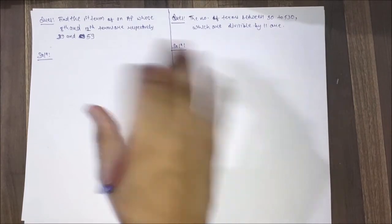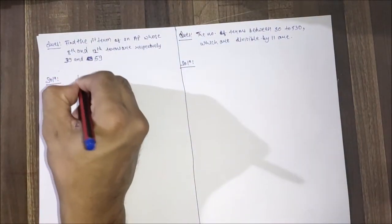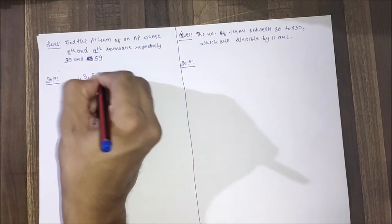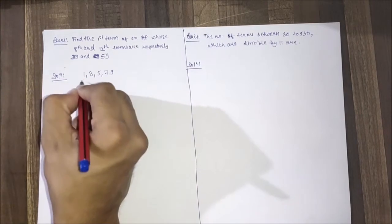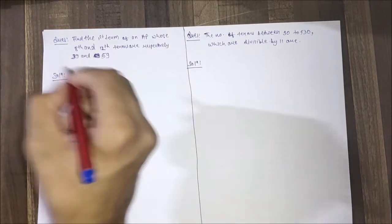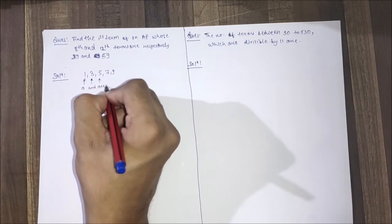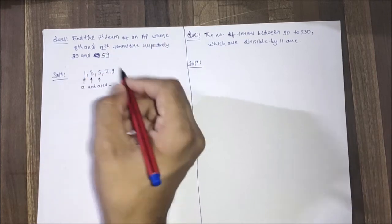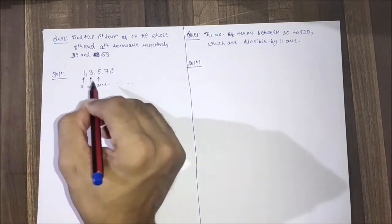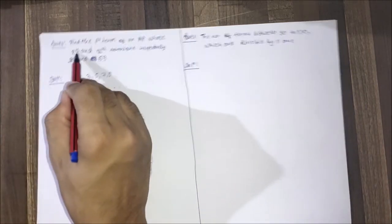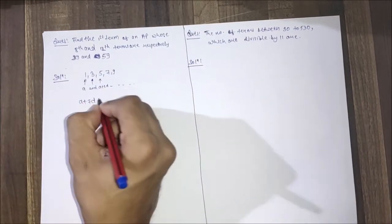In the first video when we introduced AP, I gave one AP which is 1, 3, 5, 7, 9. The first term can be represented as a, second can be represented as a+d, third can be represented as a+2d, and so on. By looking at this pattern, we can say that the 8th term can be represented as a+7d.